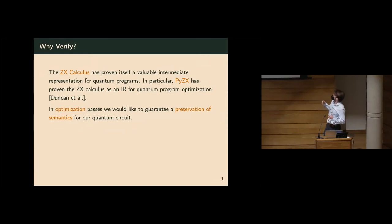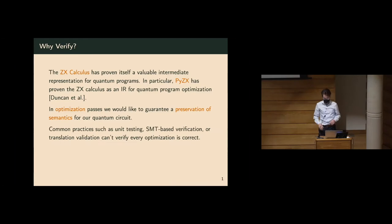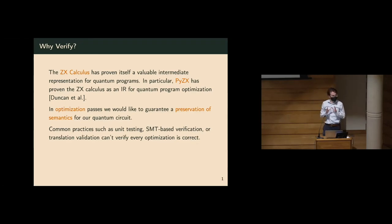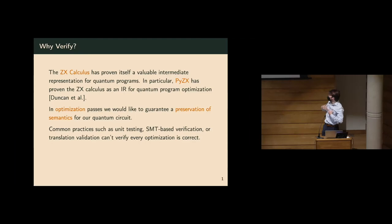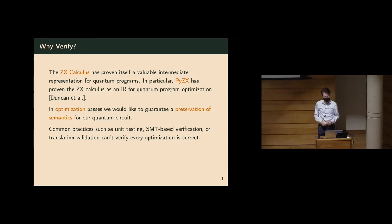There are a lot of different ways that different optimizers handle this: unit testing, SMT-based verification, translation validation like is handled in PyZX. But they can't verify every optimization is completely correct. There could still be bugs in the actual verification itself, and even if they show there's a bug and you fix it, it doesn't guarantee the absence of bugs. It just allows you to refine your program and make it better.